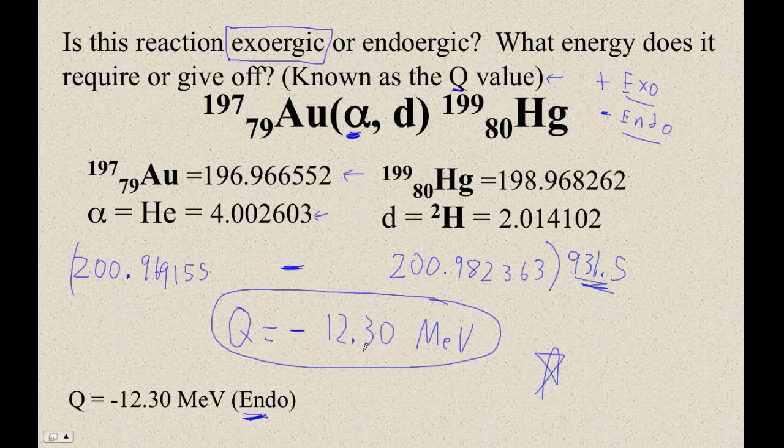We would have to accelerate that thing through, what, 6.15 million electron volts to give it that much kinetic energy. Because remember, an alpha particle is, what, two electron charges. It would have to have this much kinetic energy to make this reaction possible.